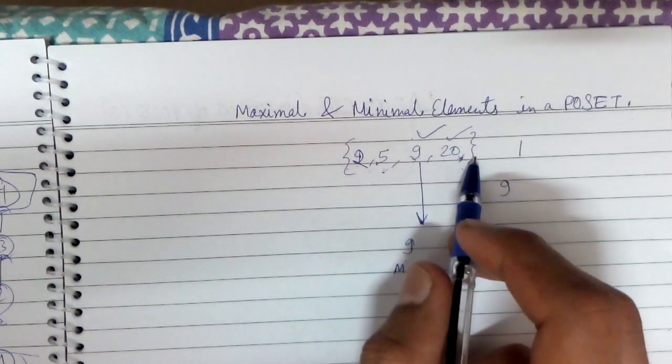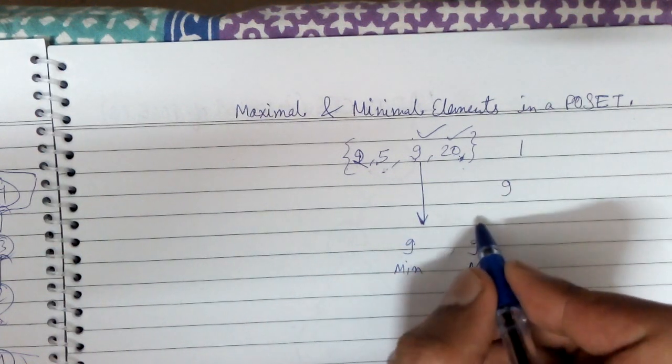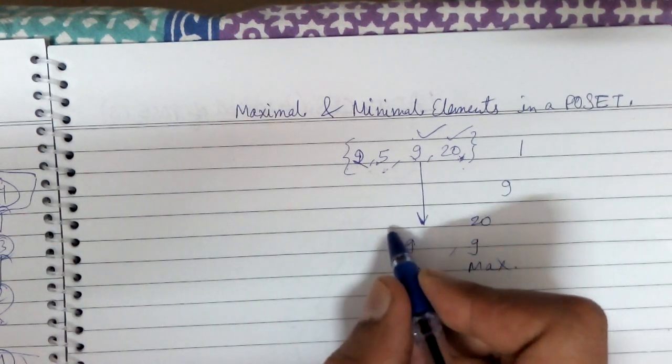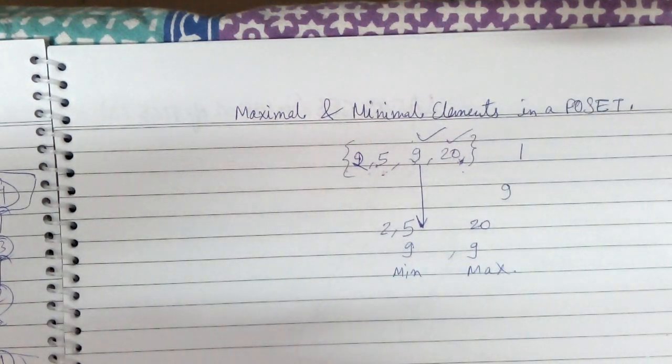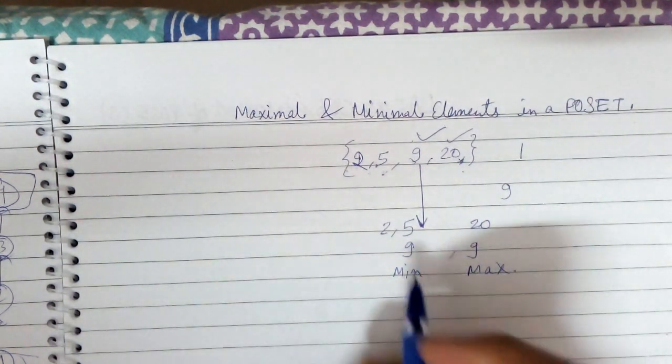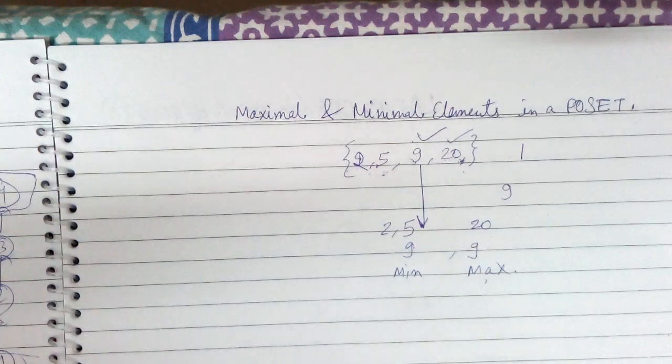But 20 is greater than 2 and greater than 5, so 20 is also maximal. There is no one below 2 and 5, so 2 and 5 are minimal. Therefore, 2, 5, and 9 are minimal elements, and 20 is maximal.